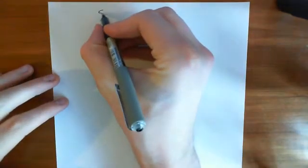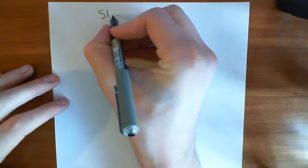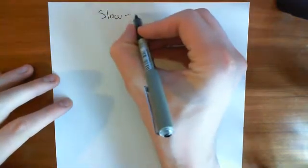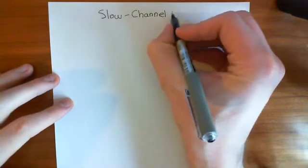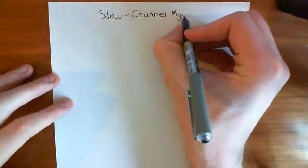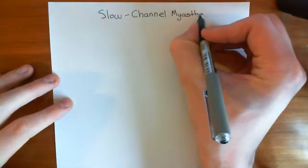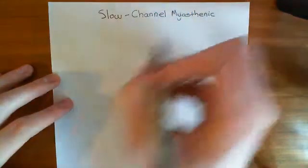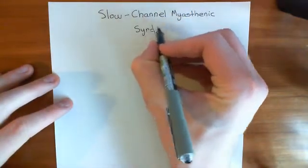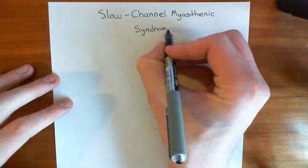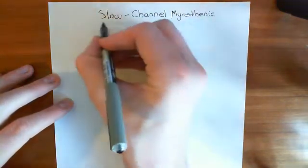Welcome to this next video in the playlist on cis-loop ligand-gated ion channels. In this video, what we're going to talk about is slow channel myasthenic syndrome, also just known as slow channel syndrome. Its full and proper name is slow channel myasthenic syndrome — where myasthenic means any condition that causes muscle weakness — although you will often hear this just referred to as slow channel syndrome.